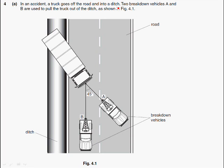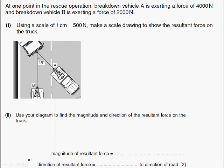We've got a truck that's gone off the road into a ditch. And two breakdown vehicles, A and B, are used to pull the truck out of the ditch. So here's our truck, and this is the breakdown vehicles, A and B. At one point in the rescue operation, breakdown vehicle A is exerting a force of 4,000 newtons. So this is breakdown vehicle A, so he's exerting a force of 4,000 newtons. And breakdown vehicle B is exerting a force of 2,000 newtons. It's always a good idea to annotate your diagram as you go along.